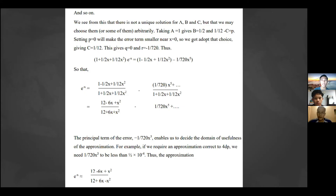Setting p = 0 will make the error term smaller near x = 0. When we substitute back the value p = 0, we can get C = 1/12. This gives q = 0 and r = -1/720.